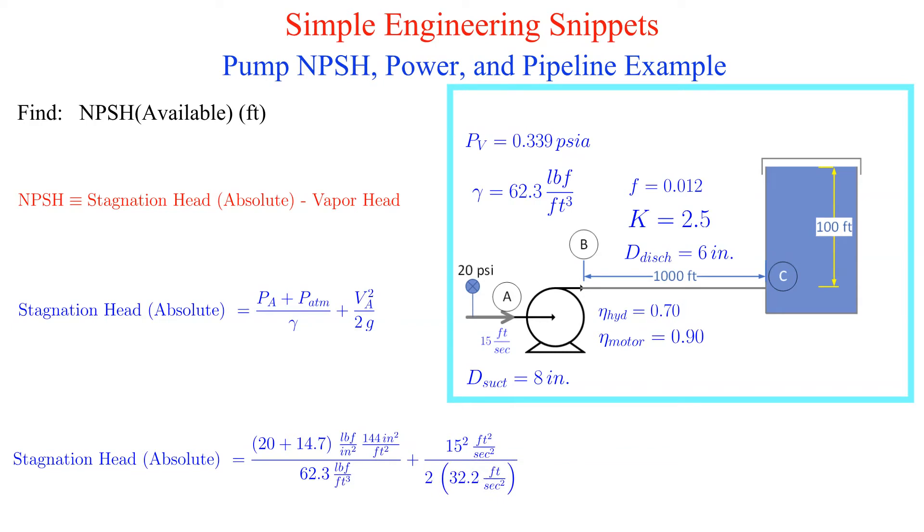Note that we are using a standard 14.7 pounds per square inch absolute for atmospheric pressure. The absolute stagnation head is 83.7 feet.